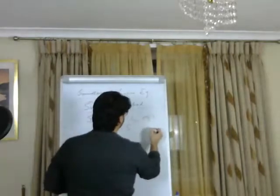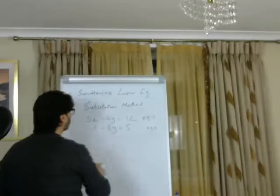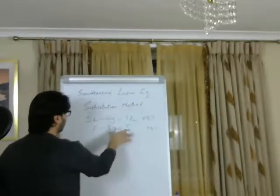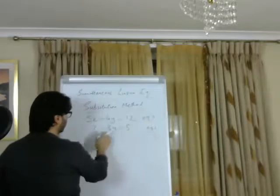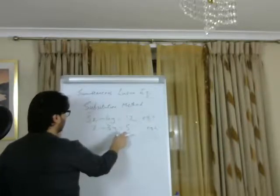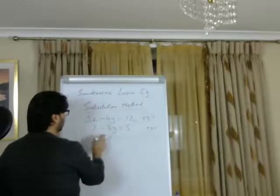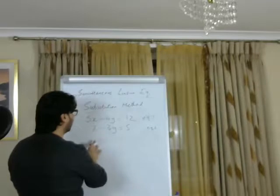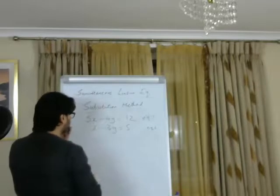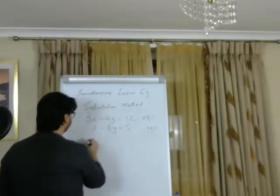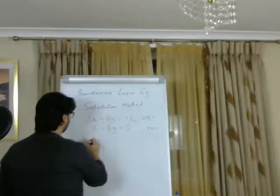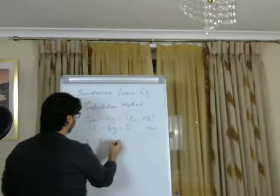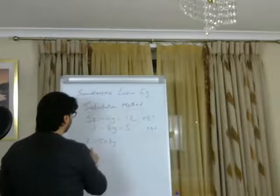Now what we need to do is make one variable the subject. You can pick any equation. I'm going to choose the second equation, which is x minus 3y equals 5, and I'm going to make one of the variables a subject. So I have to shift it to one side and put the rest to the other. Let's find the value of x first. So x equals 5 plus 3y. Now I've made x the subject.